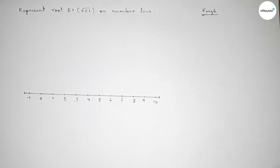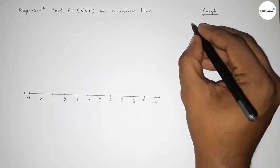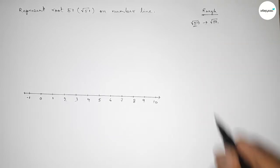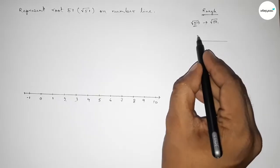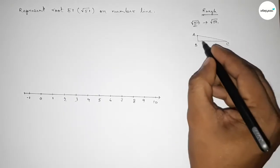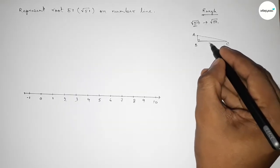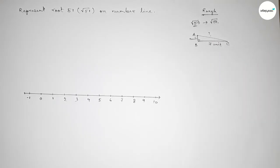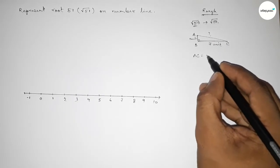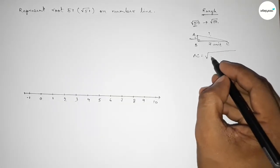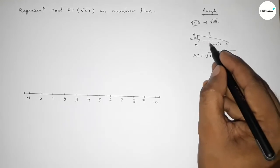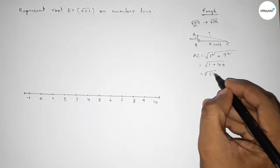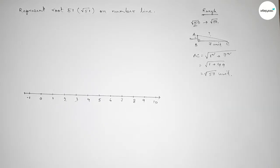Now roughly discussing some important calculations. First we have to represent root 50, then represent root 51. Drawing a right angle triangle ABC with base equal to 7 units and perpendicular AB equal to 1 unit. By Pythagoras theorem, hypotenuse AC equals root over 1 squared plus 7 squared, which is root of 1 plus 49, so AC equals root 50 units.